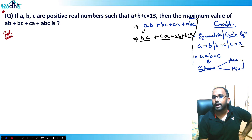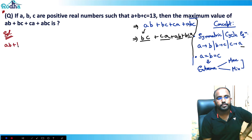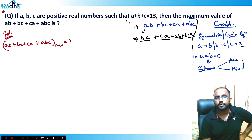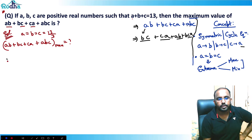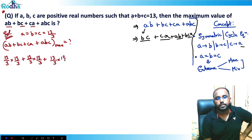Here I need to find the maximum value of ab plus bc plus ca plus abc. Since this is a cyclic equation, I will equate a equal to b equal to c, which gives 13 divided by 3. So I'll substitute 13/3 into the expression: (13/3)(13/3) plus (13/3)(13/3) plus (13/3)(13/3) plus (13/3)(13/3)(13/3).